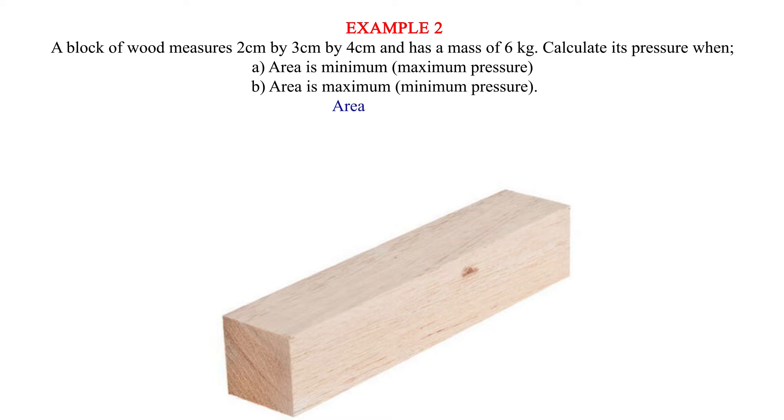Area equals 2 times 3 equals 6 cm square. 2 times 4 equals 8 cm square. 3 times 4 equals 12 cm square.